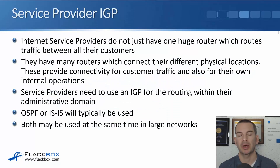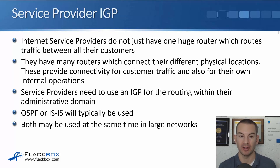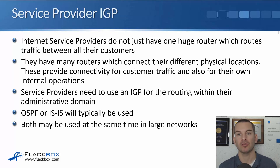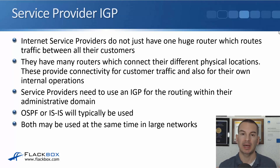In this lecture you'll learn about why we have BGP, the Border Gateway Protocol. Internet service providers do not have just one huge router; they've got many routers which connect all of their different physical locations. Those routers provide connectivity for customer traffic and also for the service provider's own internal traffic. Service providers need to use an IGP, an Interior Gateway Protocol, for routing within their administrative domain — and in service providers it's usually OSPF or ISIS.